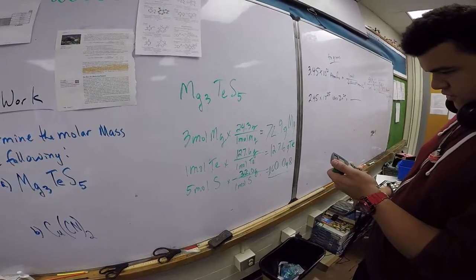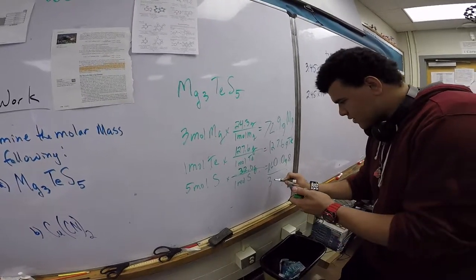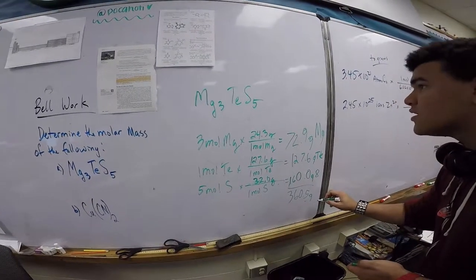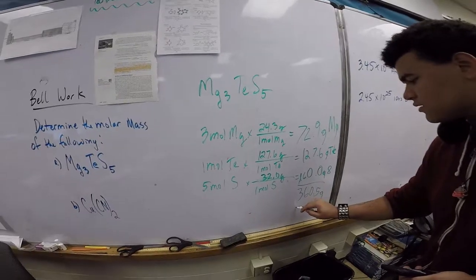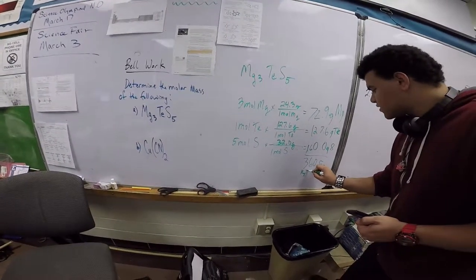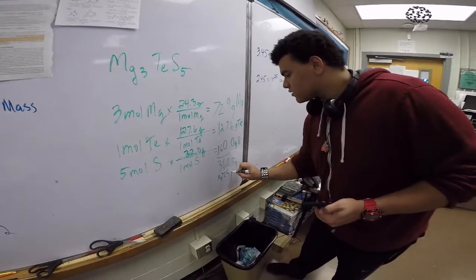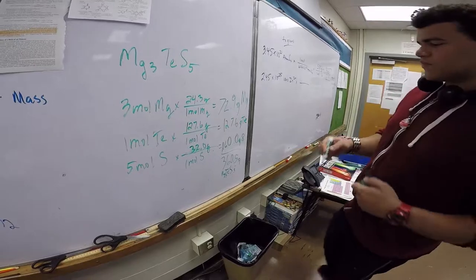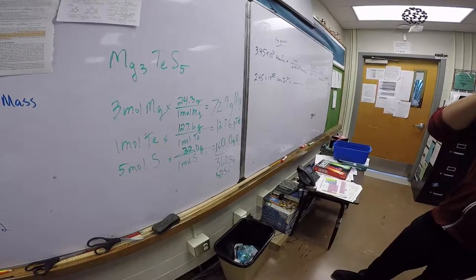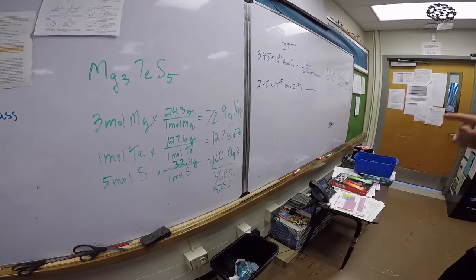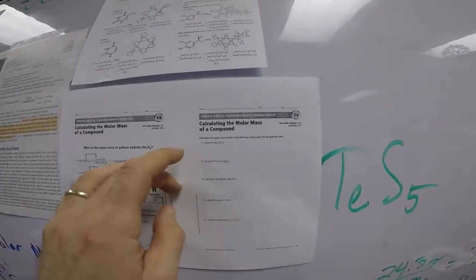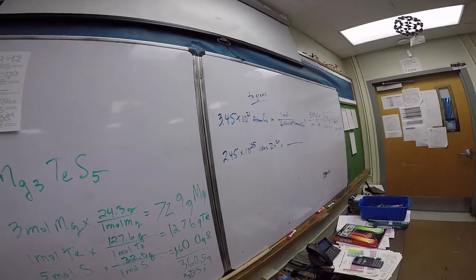This looks like magnesium tellurium sulfide. This is most likely a polyatomic ion. So it's 360.5 grams of magnesium tellurium compound. TE is tellurium, and sulfur. Sulfide. It's called magnesium thiotelurite. Zane, it's called magnesium thiotelurite — it's on the page.